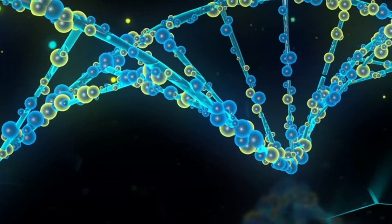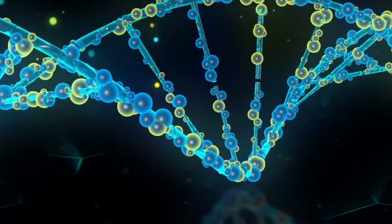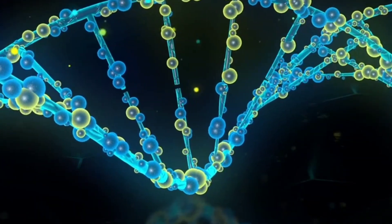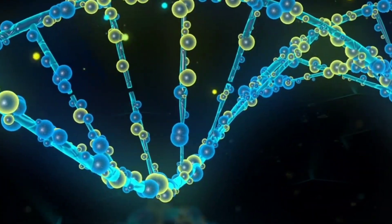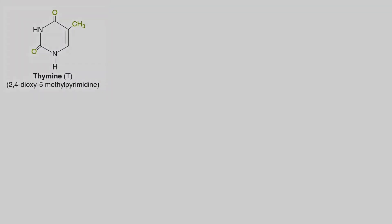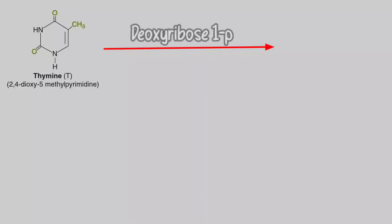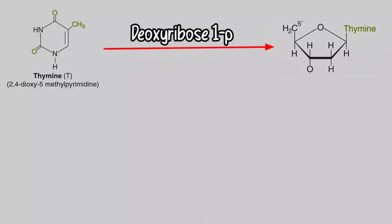For example, free thymine is converted to the corresponding nucleotide thymidine monophosphate. This takes place through two steps. Step one: thymine reacts with deoxyribose-1-phosphate to form thymidine. This step is catalyzed by thymidine phosphorylase, which removes the phosphate from the deoxyribose, leading to attachment of thymine to the deoxyribose, forming thymidine.